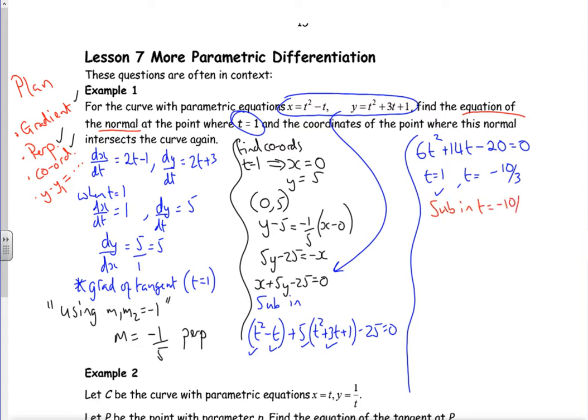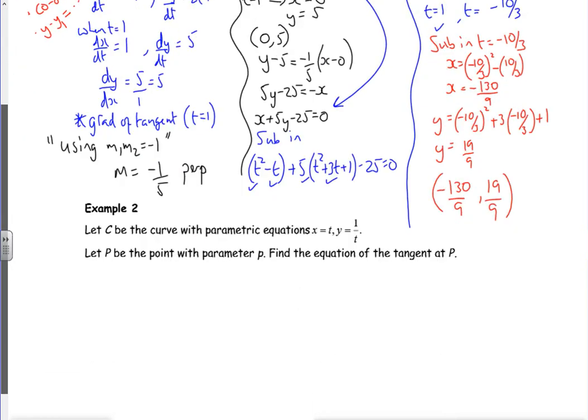If I sub in t is minus 10 over 3, that'll give me minus 10 over 3 all squared, I'm going to write it out actually, minus 10 over 3 all squared minus 10 over 3, that gives me minus 130 over 9 for x. For y it's going to be minus 10 over 3 squared plus 3 lots of minus 10 over 3 plus 1, so that gives me a y value of 19 over 9. So the other point of intersection is a little bit messy because of the coordinates, and in an exam you might think you got it wrong because it's a bit crazy, but that's fine, that gives us a set of coordinates.